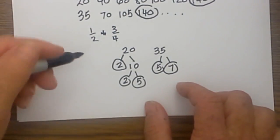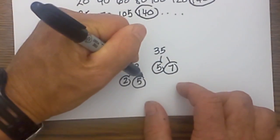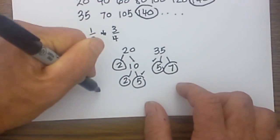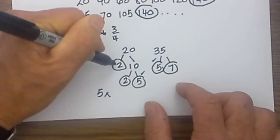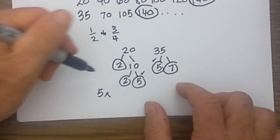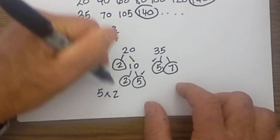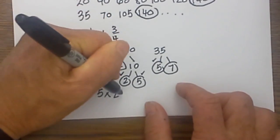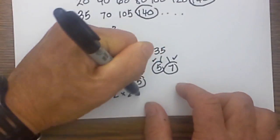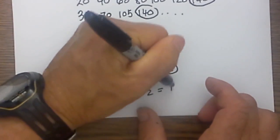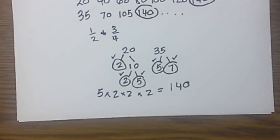I then look for common numbers in both of these and 5 is found in both so I will write a 5, and then I multiply the rest of the prime numbers together. So I write a 2 and a 2 and a 7, and when you multiply that together you get 140.